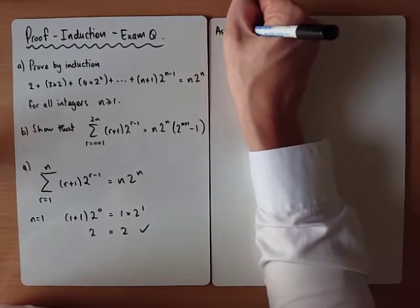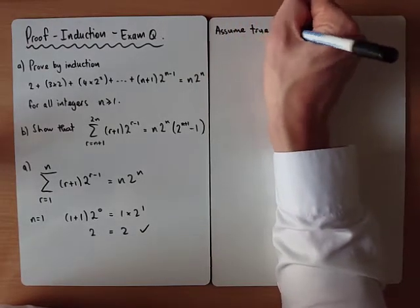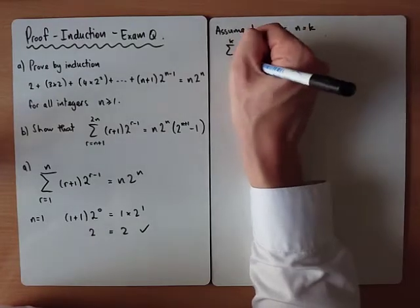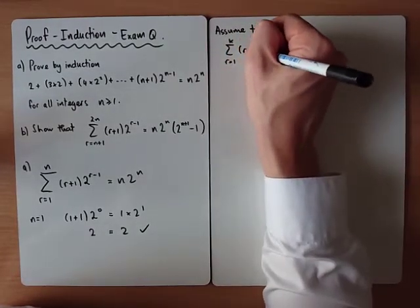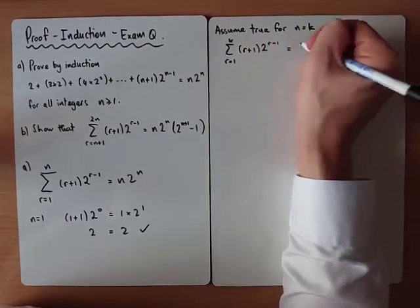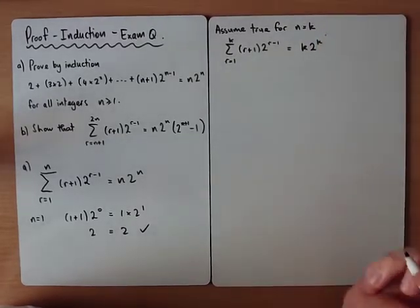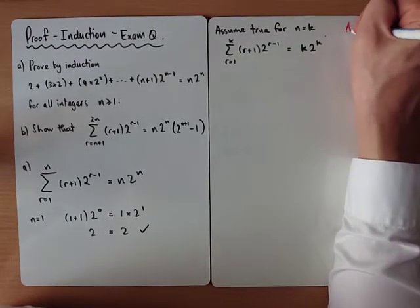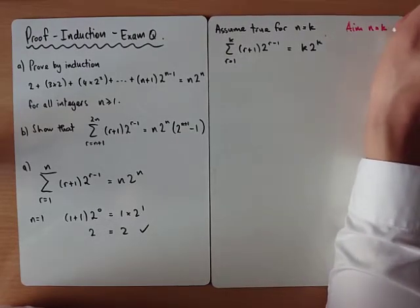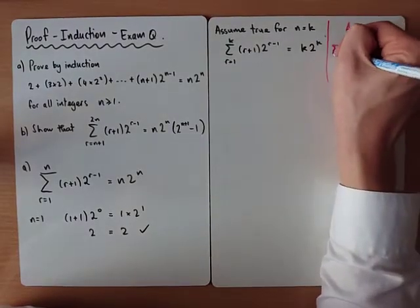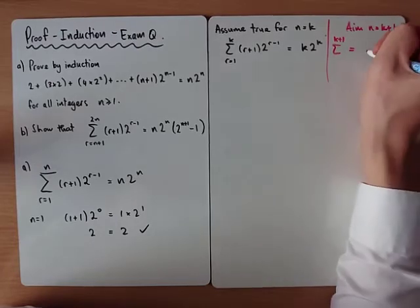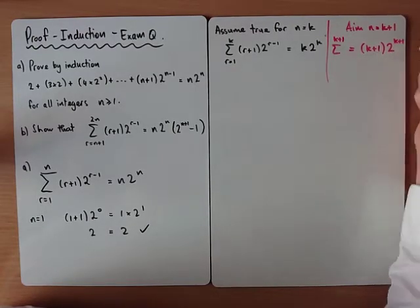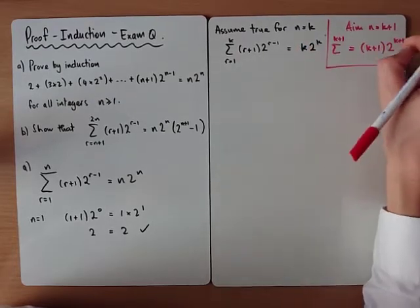Now assume true for the general term n=k, so the sum from 1 to k looks like k × 2^k. At this point I like to write down what I'm aiming to end up with. The aim for n=k+1 is that the sum of k+1 terms should end up looking like (k+1) × 2^(k+1). If we can prove the result for the next term it will look like that.